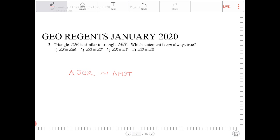What does that mean? So if I were to draw this out, I'm going to call this JGR, and this is similar to - I'm going to try to draw a similar triangle in shape but smaller. This is MST.